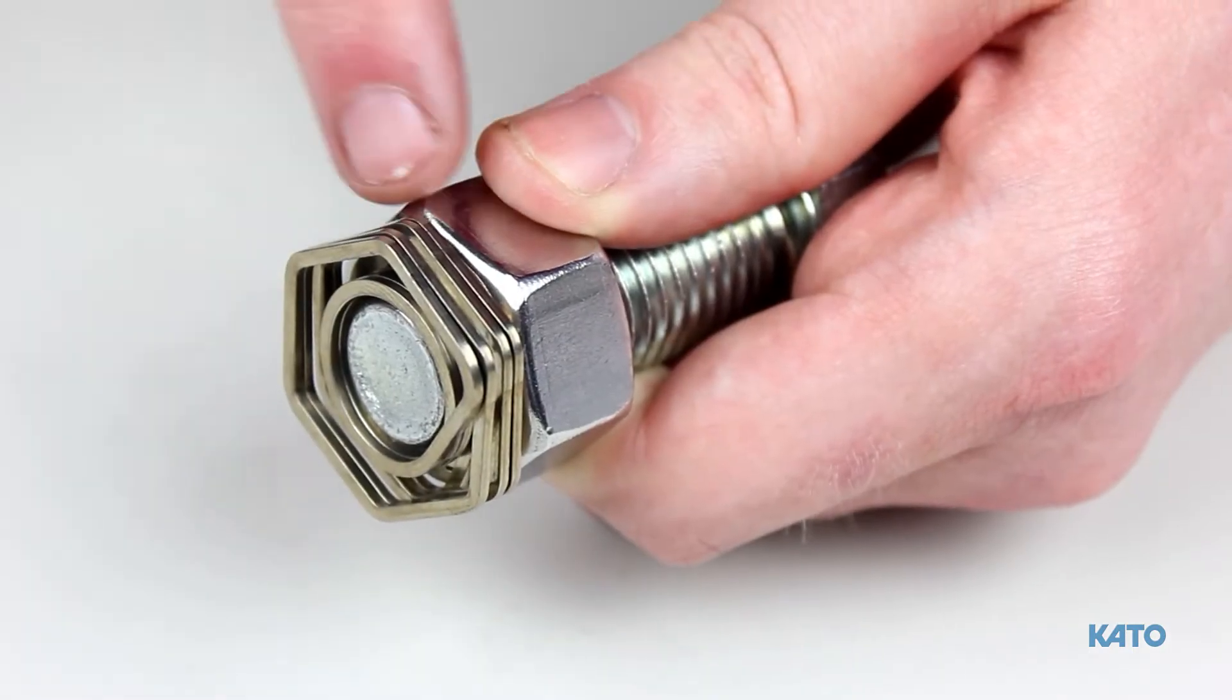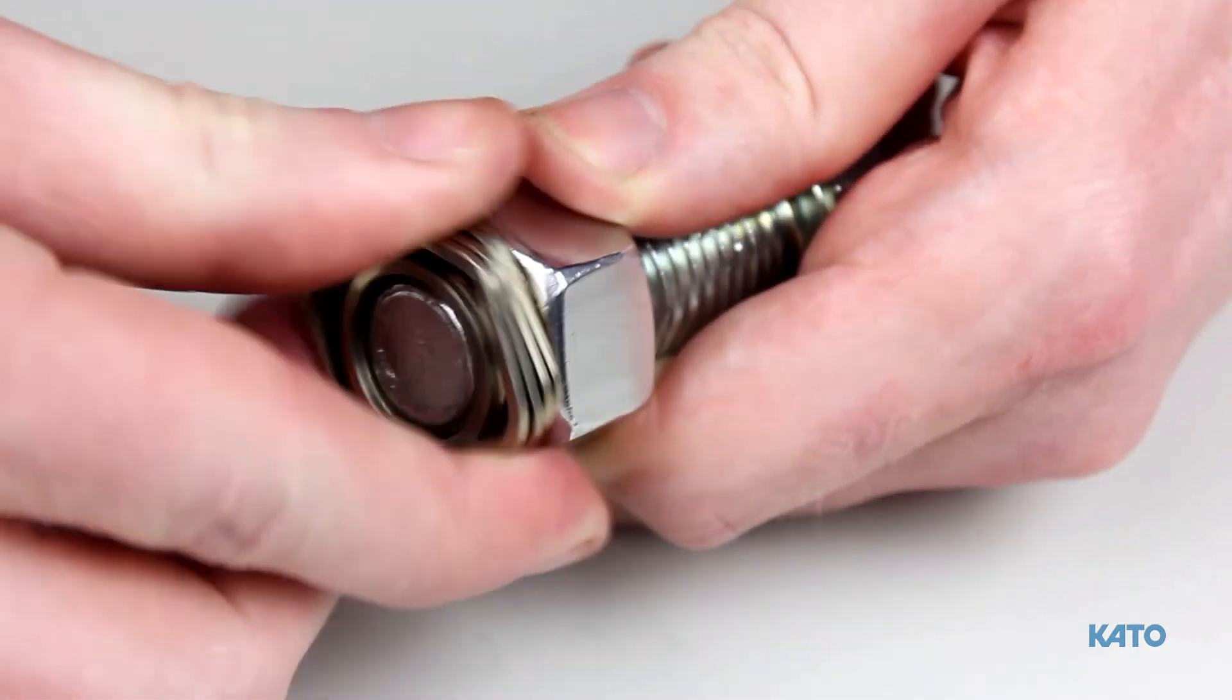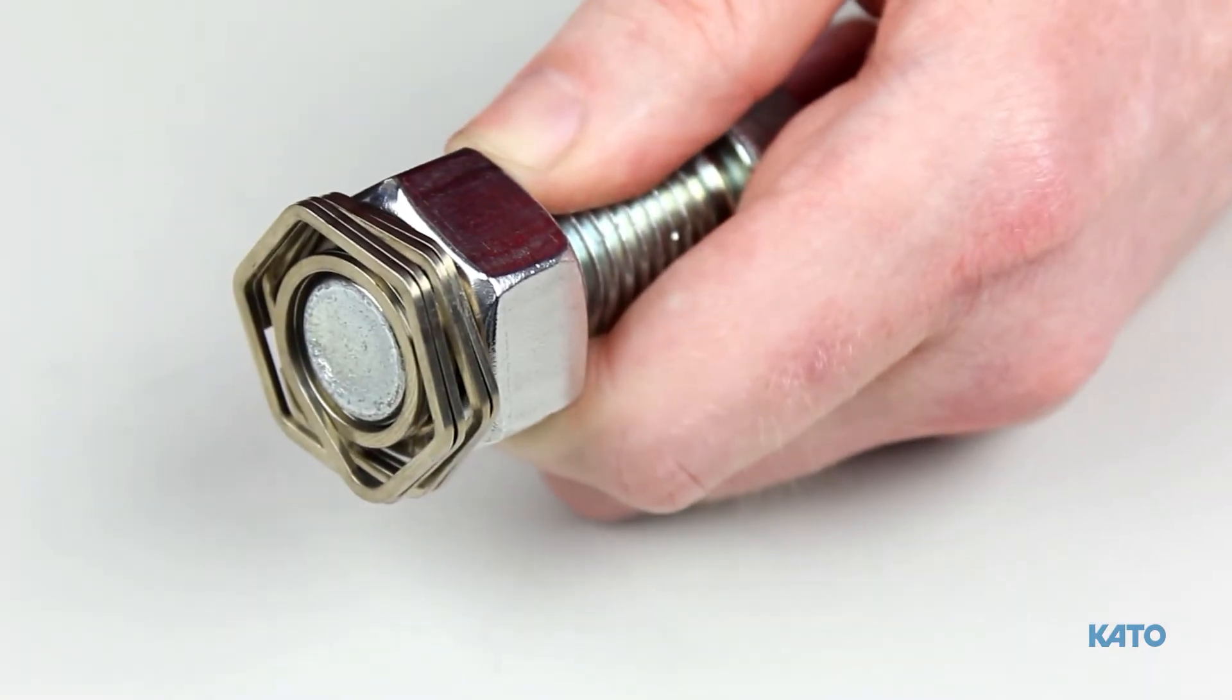If there is a gap between Lock One and the nut, simply hand tighten Lock One until it is flush with the nut.